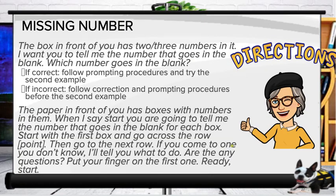We use standardized instructions: 'The box in front of you has two or three numbers in it. I want you to tell me the number that goes in the blank. Which number goes in the blank?' If correct, follow the prompting procedures and try the second example. If incorrect, follow the correction procedures before the second example. Then say: 'The paper in front of you has boxes with numbers in them. When I say start, tell me the number that goes in the blank for each box. Start with the first box and go across the row — point here — then go to the next row. If you come to one you don't know, I'll tell you what to do. Are there any questions? Put your finger on the first one. Ready? Start.'